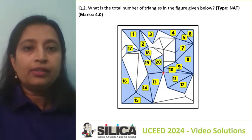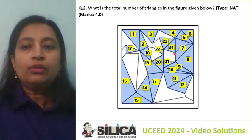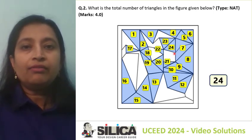We also have triangles 20, 21, 22, 23, 24. So there are a total of 24 triangles, and the answer is 24.